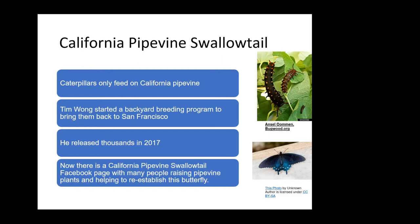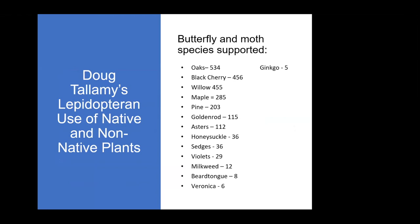If you look at Doug Tallamy, he's a researcher who has looked at lepidopteran species on native plants. On oaks, they support 534 different species. But if you plant a ginkgo, which is non-native, it supports five — and there's not even good evidence that they feed a lot on ginkgo. So all these native plants support far more caterpillars than some of the non-natives.